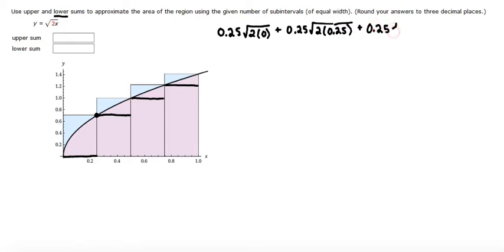And then the last rectangle would have a height where x equals 0.75. The width would be 0.25, so 0.25 times the square root of 2 times 0.75. So then simplifying, the first term is just 0.